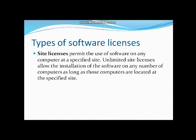Site license permits the use of software on any computer at the specified site. An unlimited site license allows installation of software on any number of computers, as long as those computers are located at the specified site. This generally comes with softwares specially made for one site — like one company having its own software installed on all its computers, or one organization that has designed their own software.